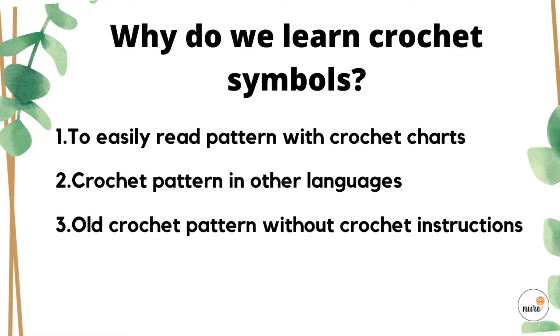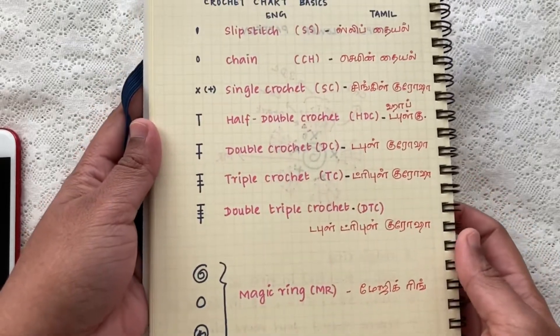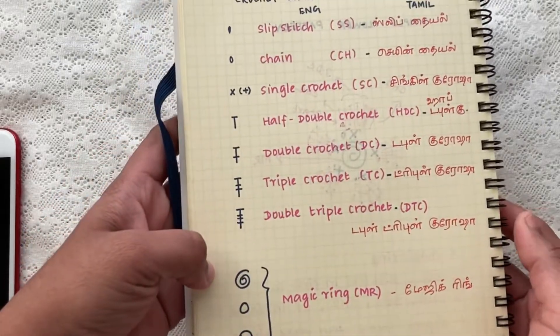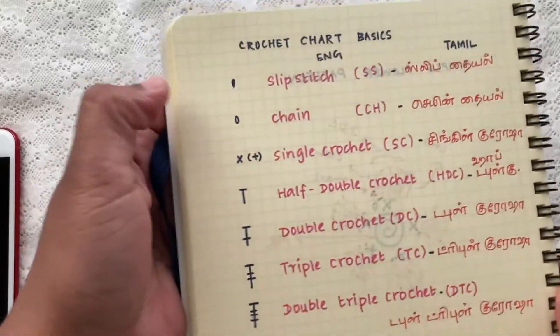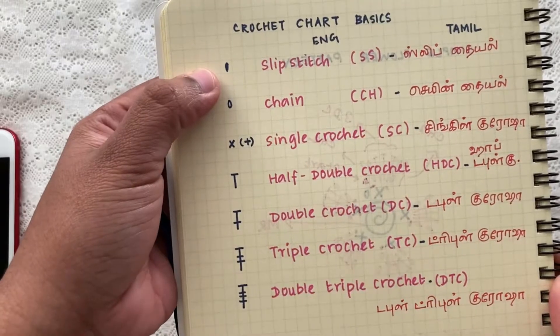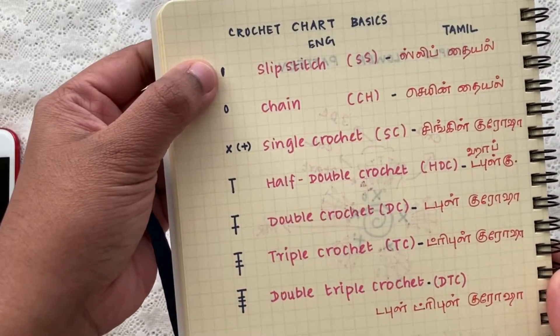Let's dive into crochet chart basics reading. This is like a short list of crochet symbols I use in my patterns. The first one is a slip stitch. As you can see, the slip stitch is represented by an oval that is darkened.